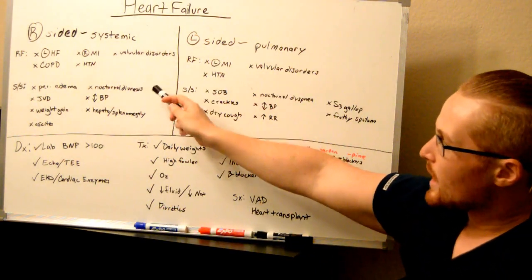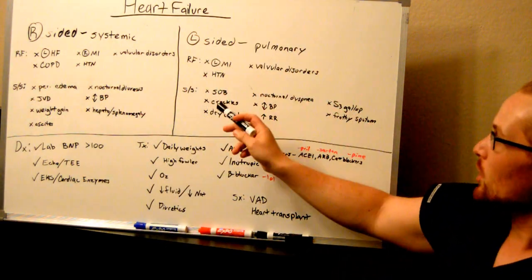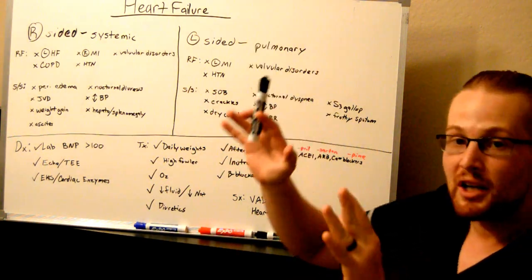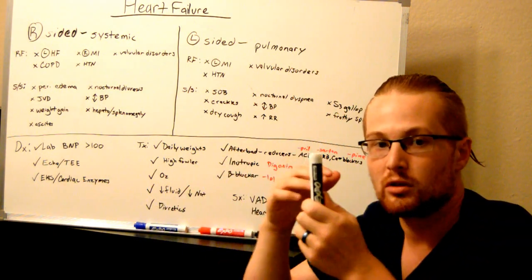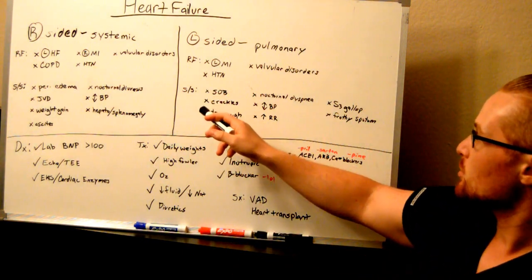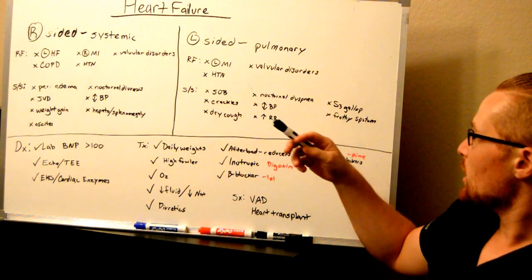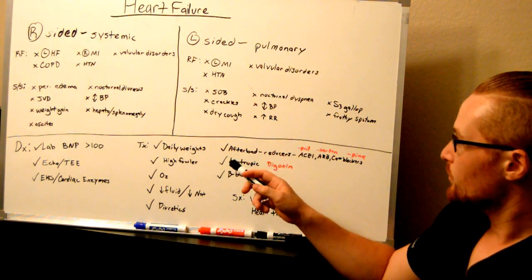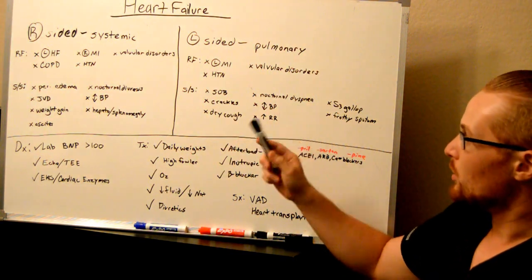Right sided is systemic edema whereas left sided backs up into the lungs first, leads to pulmonary edema. Pulmonary edema is a critical state but you still have left sided leads to pleural fluid backup and congestion so you'll have shortness of breath, crackles and when they have a dry cough or frothy sputum. They're going to have a decreased oxygen saturation and they may need oxygen and they have an increased respiratory rate. You'll also notice an S3 gallop with left sided heart failure.